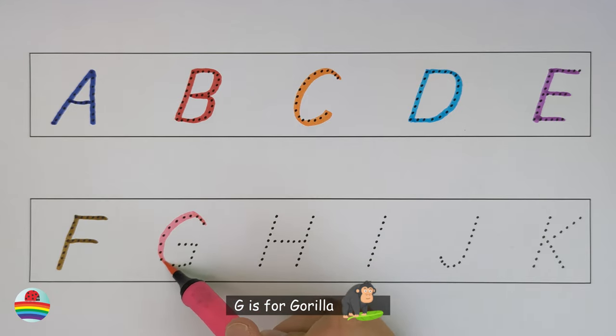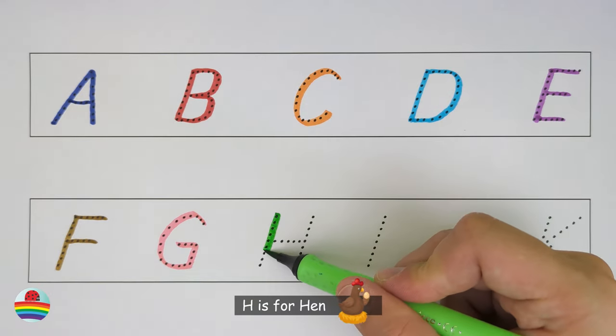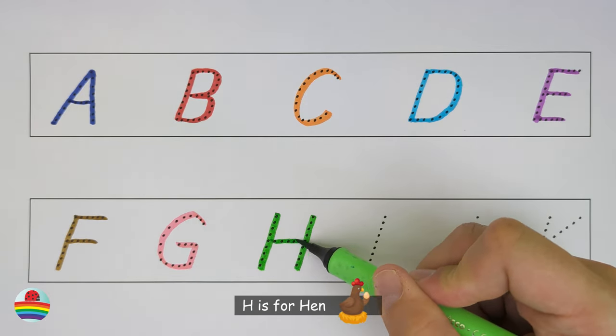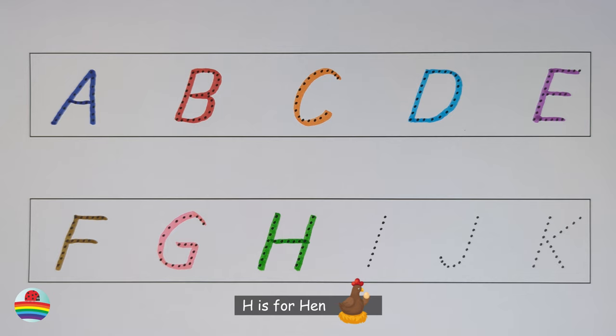G. G is for gorilla. G. H. H is for hen. H.